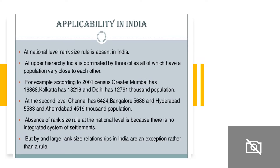Regarding applicability in India, at a national level the rank-size rule cannot be applied. The upper hierarchy in India is dominated by three cities — Mumbai, Kolkata, and Delhi. At the second level come Chennai, Bangalore, and Hyderabad. The absence of the rank-size rule at the national level is because there is no integrated system of settlements. By and large, the rank-size rule in India is an exception rather than a rule.